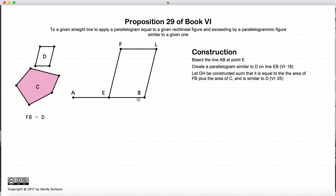Now, the next thing we need to do is construct a parallelogram that is similar to D that is the total area of C plus FB. We're going to do that in a couple of steps.